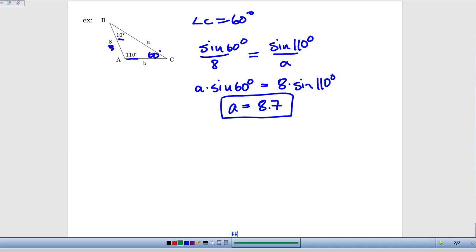And then we can go ahead and solve for length B. We could go ahead and use that same sine of 60 over 8 to get us started, equals, and then it's the sine of that 10 degree angle for angle B, divided by length B.